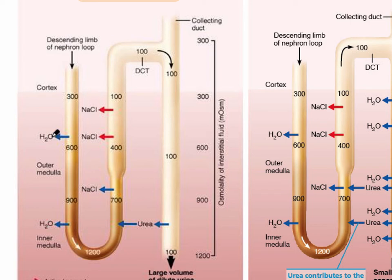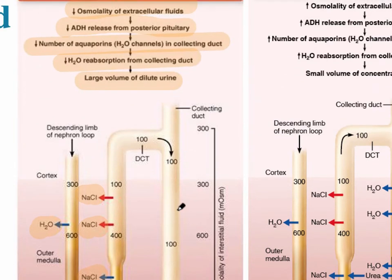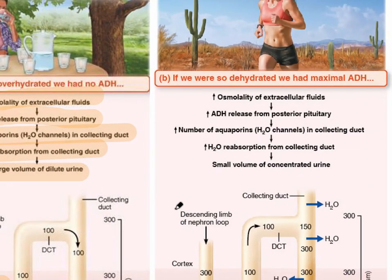As shown on the diagram, the descending limb is where water is reabsorbed, so the concentration goes from 300 to 1200 milliosmoles. In the ascending limb, there is reabsorption of salt. In response to the low plasma concentration, dilute urine is formed, and we see the concentration drops to 100 milliosmoles at the base of the collecting duct.